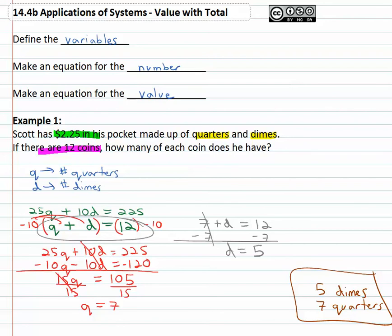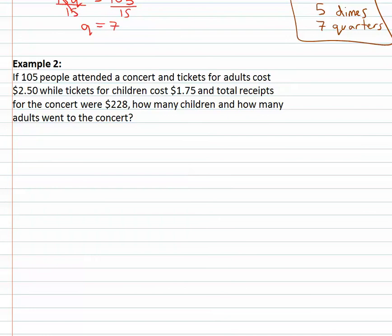Let's try another example defining the variables and setting up two equations, one for the value and one for the number. Here we've got a bunch of people attending a concert, 105 of them, $2.50 for an adult ticket, $1.75 for a child ticket, and total receipts were $228. How many children and adults went to the concert?